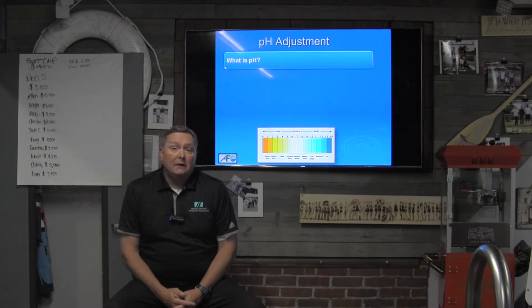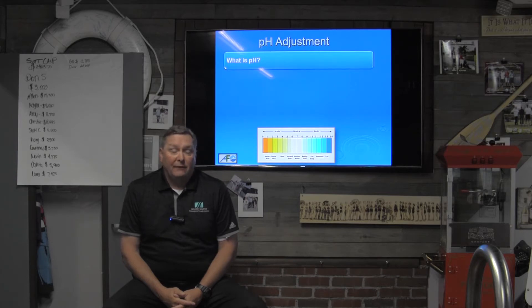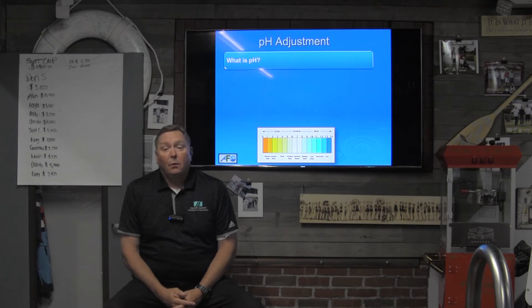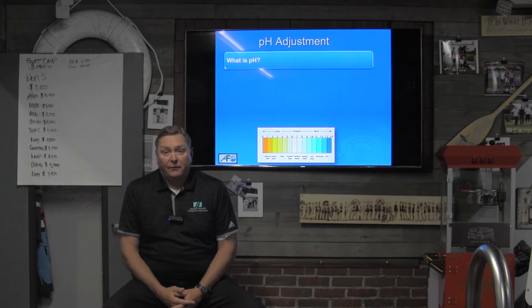The pH of the fluid in our eyes is around 7.5, which is why we try to hold our pH range in the water at 7.4, 7.5, or 7.6.